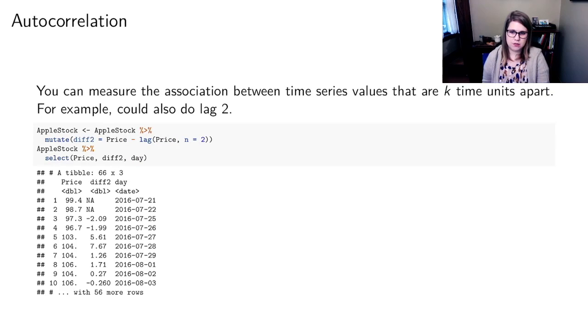Another idea that we need to introduce is the idea of autocorrelation. Autocorrelation is essentially the correlation between values that are some number of time units apart. We could look at the correlation between the price today and the price yesterday or the price today and the price a year ago.